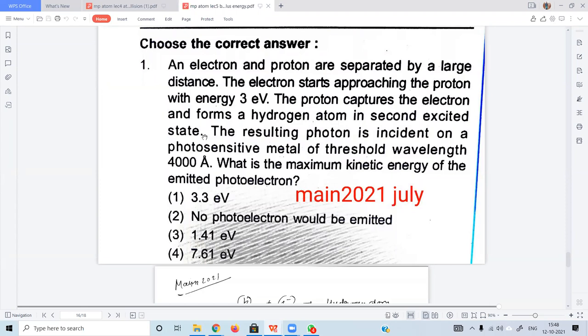The resulting photon is incident on a photosensitive material with threshold wavelength 4000 Å. What is the maximum kinetic energy of the emitted photoelectron? The electron that was released, the photon that came out, the final result was a hydrogen atom in the second excited state, so what photon energy was released?